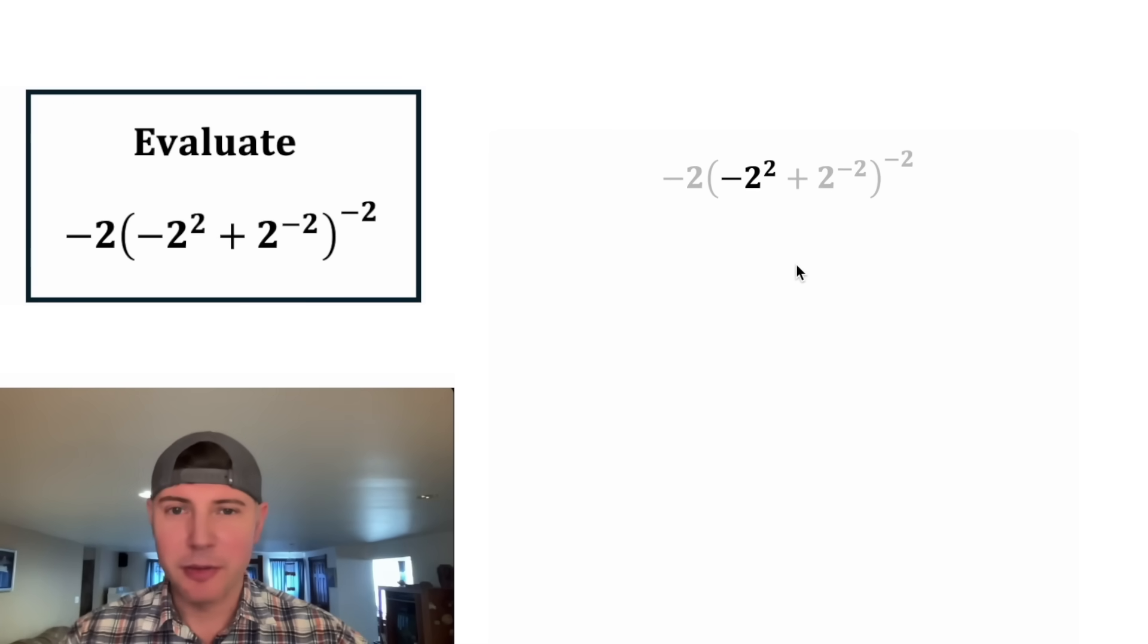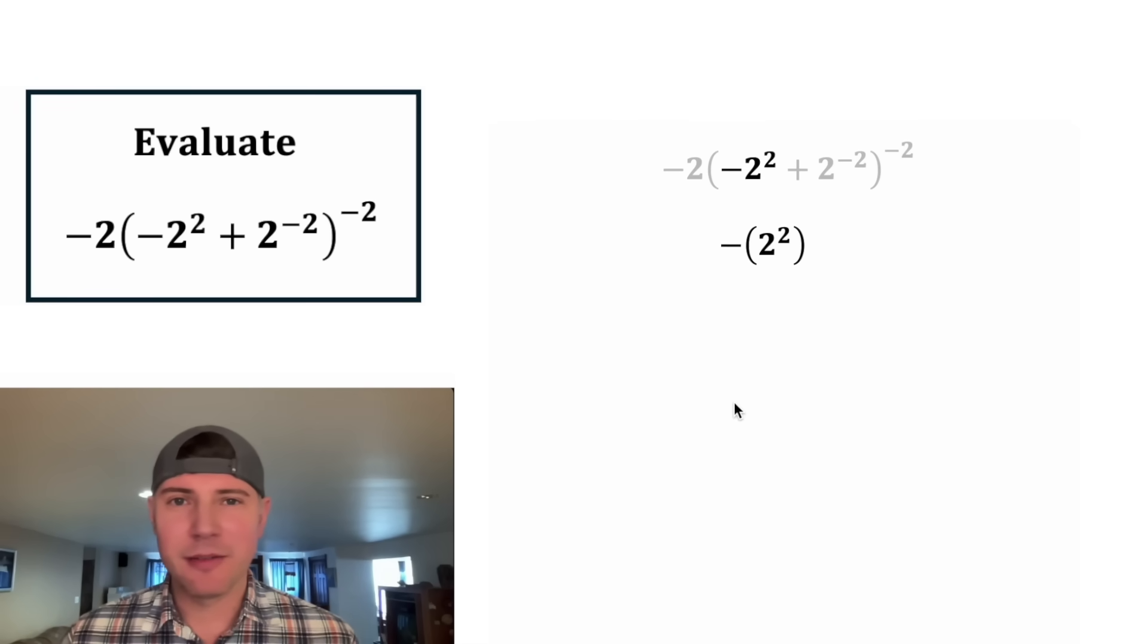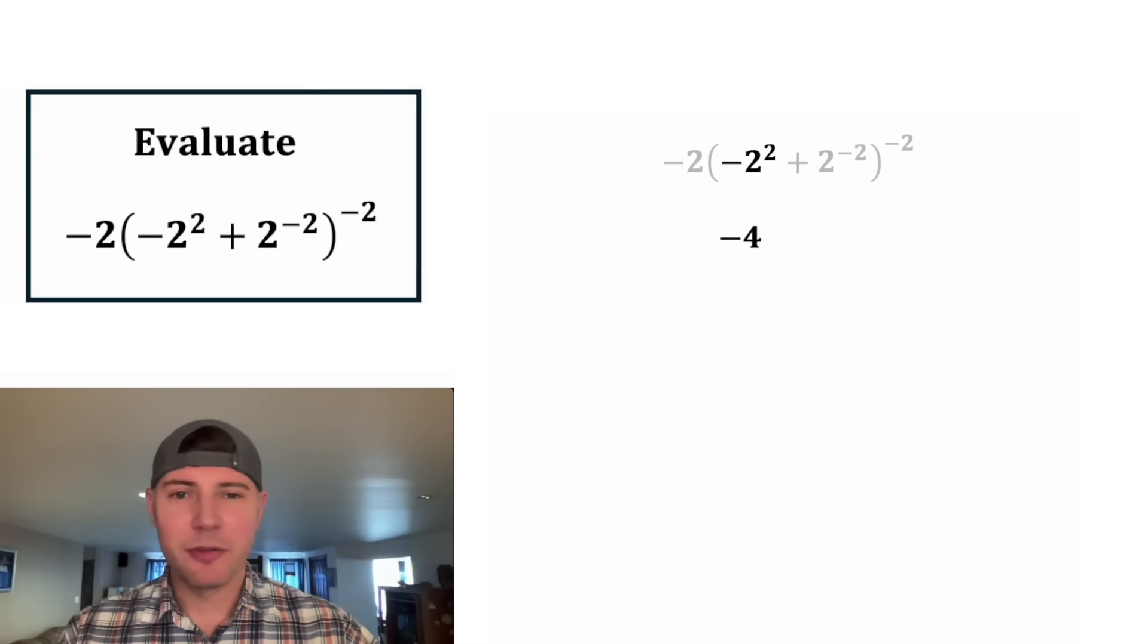First, let's focus on this term in the parentheses. Negative two squared means the same thing as negative two squared. You end up doing the exponent before you apply the negative. Inside the parentheses, two squared is equal to four. So the first term is negative four.